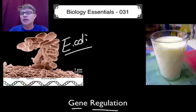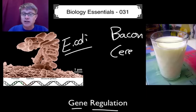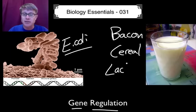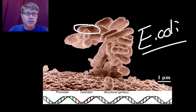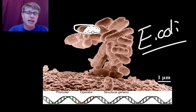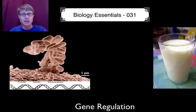E. coli is interesting in that it eats whatever we eat. So if I eat bacon for breakfast it has to break down the proteins and the lipids in the bacon. If I have cereal it has to break down the carbohydrates. If I have milk it has to break down the lactose. E. coli can go from an organism that has zero proteins to break down lactose to one where 50% of the weight of E. coli is simply enzymes that deal with lactose — and it can do it just like that. So how do they do that? They do that through gene regulation.